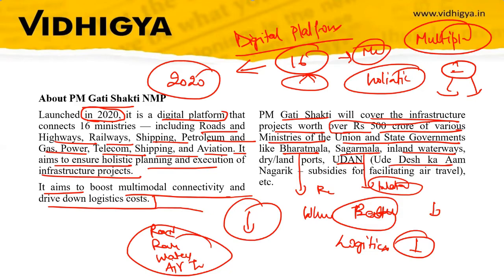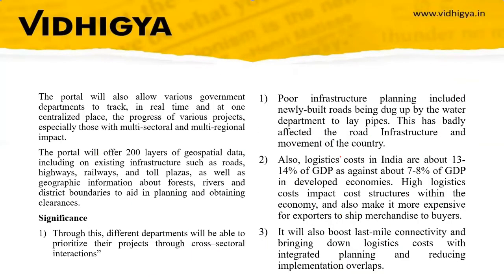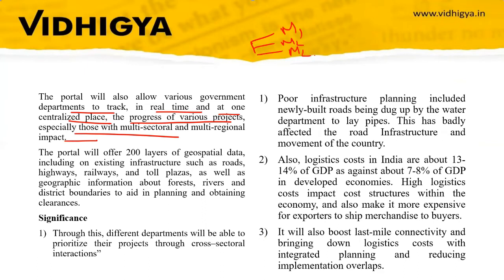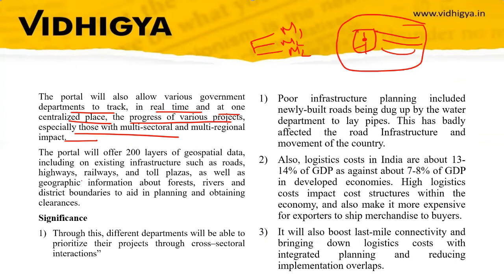The portal will allow various government departments to track in real time, at one centralized place, the progress of various projects. Projects which involve numerous ministries — Ministry 1, Ministry 2, Ministry 3 — are all tracked under this portal. These different ministries can monitor the implementation and track the progress of the project.